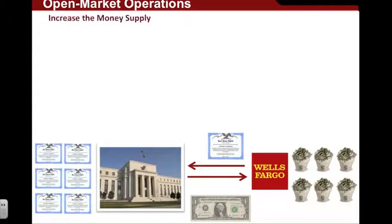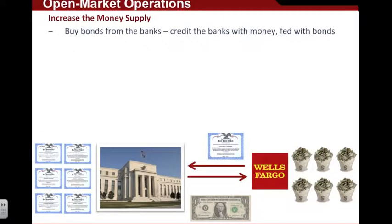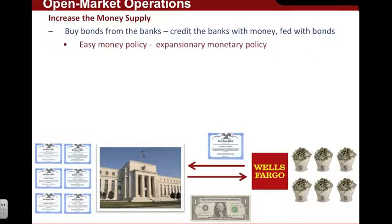So if the Federal Reserve wants to increase the money supply, they buy bonds and securities from the banks. This credits the banks with money, and the Fed holds the bonds. This expansionary monetary policy is also referred to as easy money — the Fed is making it easy for people to borrow money in the economy with the idea that this will help grow the economy.